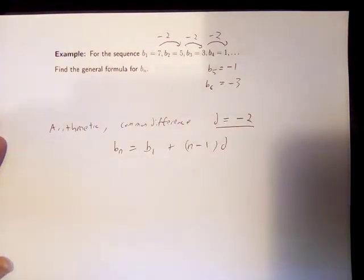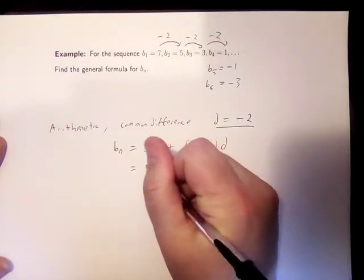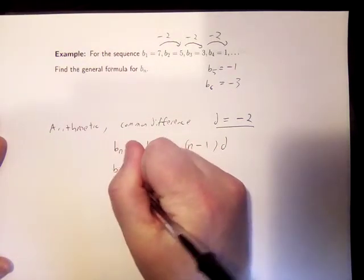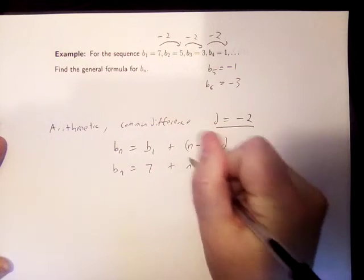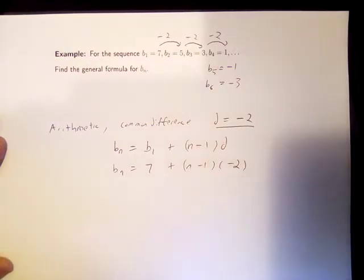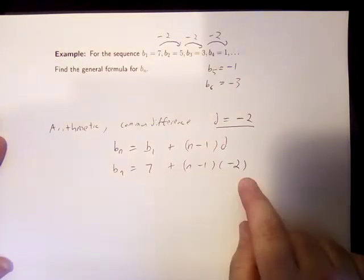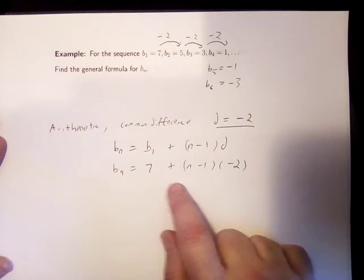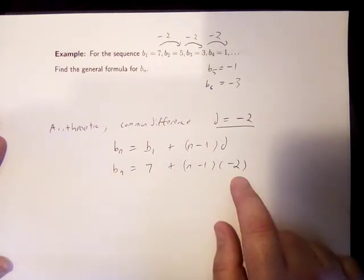And we know all of those things. We know that our first term is 7, and the common difference is negative 2. So the general formula for our sequence 7, 5, 3, 1, and so on, is 7 plus n minus 1 times negative 2.